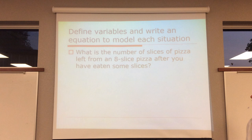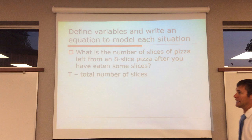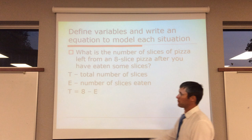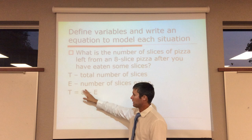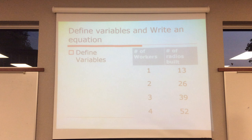Then, we go through some story problems. What is the number of slices left over from an eight-slice pizza after you've eaten some slices? So, we want to define our variables. What are our unknowns? And write an equation to model each situation. t is the total number of slices. And then, we could say e is the number of slices eaten. So, if I want to write an expression, I could say that the total number of slices that I have left is equal to 8, how many I started with, minus e, how many I've eaten. And that would be my equation right there.